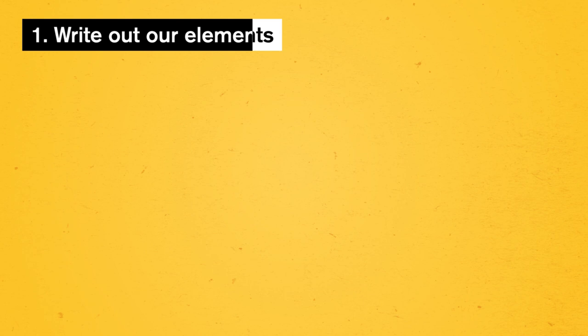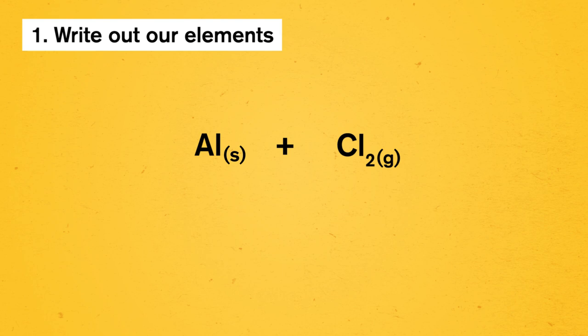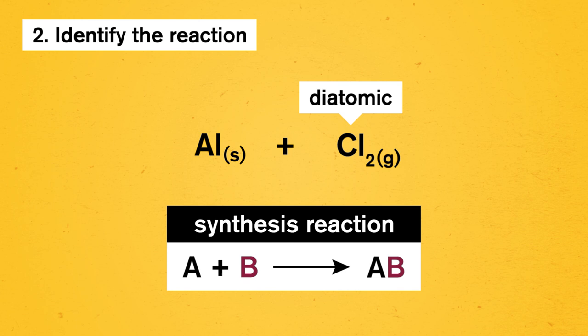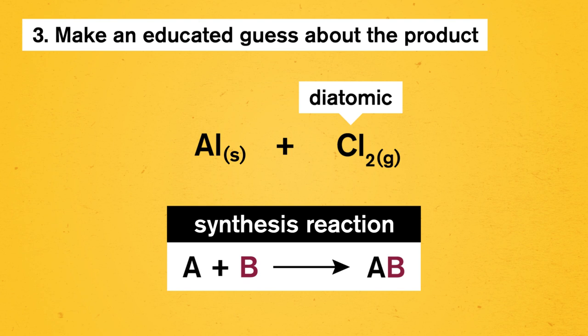Let's use a reaction between solid aluminum and chlorine gas as an example. First, we'd write out our elements, aluminum and chlorine, remembering that chlorine is diatomic. Second, we can identify this as a synthesis reaction, since the reactants are two single elements. Third, we'll make an educated guess about the product. We know we're combining reactants, so let's write out aluminum chloride to start.